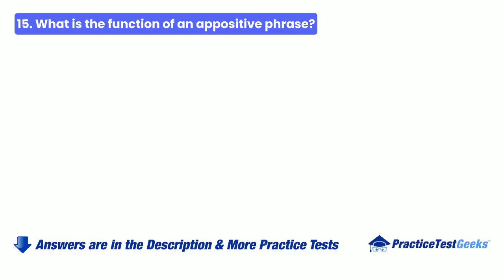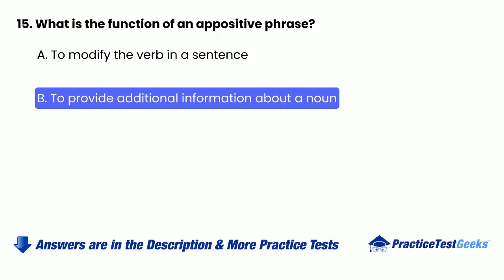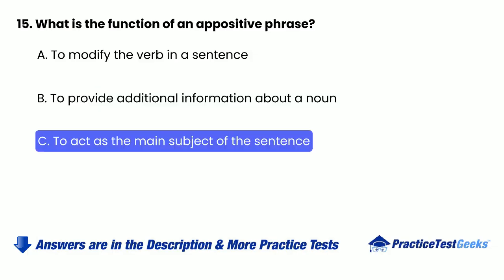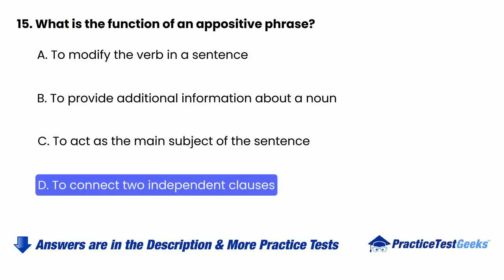15. What is the function of an appositive phrase? A. To modify the verb in a sentence. B. To provide additional information about a noun. C. To act as the main subject of the sentence. D. To connect two independent clauses.